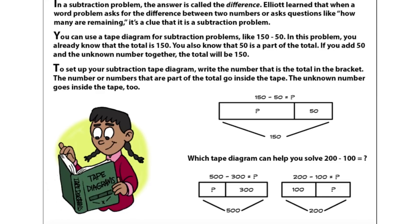In a subtraction problem, the answer is called the difference. Elliott learns that when a word problem asks for the difference between two numbers, or asks questions like how many are remaining, it's a clue that it is a subtraction problem. You can use a tape diagram for subtraction problems, like 150 minus 50. In this problem, you already know that the total is 150. You also know that 50 is a part of the total. If you add 50 and the unknown number together, the total will be 150. To set up your subtraction tape diagram, write the number that is the total in the bracket. The number or numbers that are part of the total go inside the tape. The unknown number goes inside the tape, too.